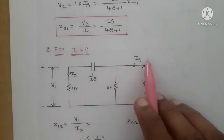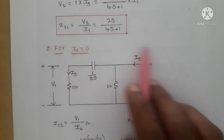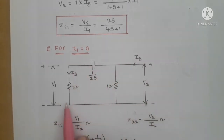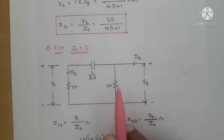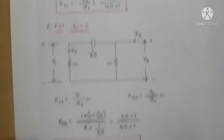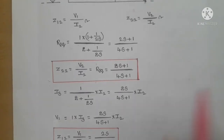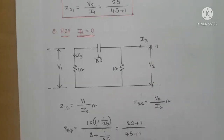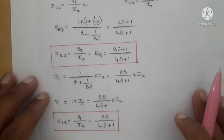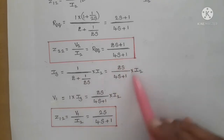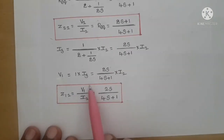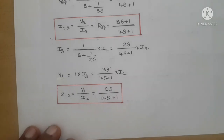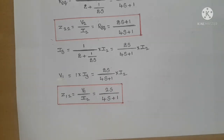For Z12 = v1/i2, using current division: i3 = [1 / (1 + 1 + 1/(2s))]·i2 = [2s / (4s + 1)]·i2. Since v1 = 1·i3, substituting gives v1 = [2s / (4s + 1)]·i2. Therefore Z12 = v1/i2 = 2s / (4s + 1).